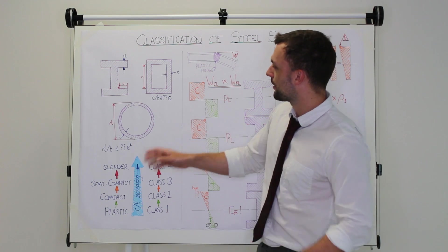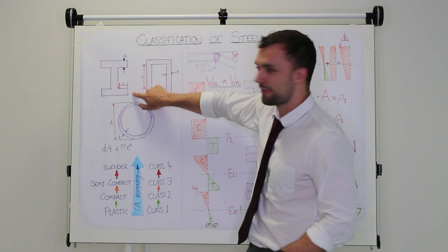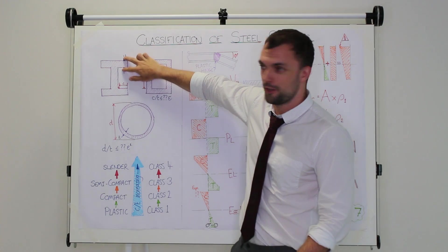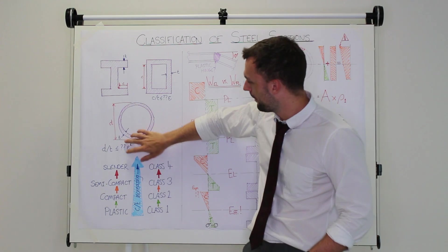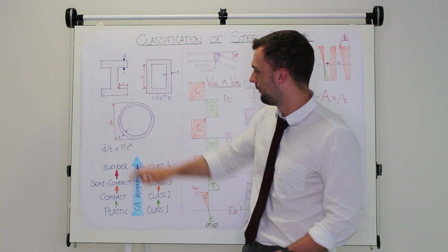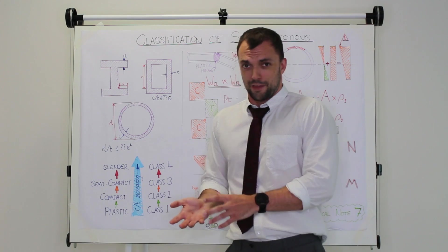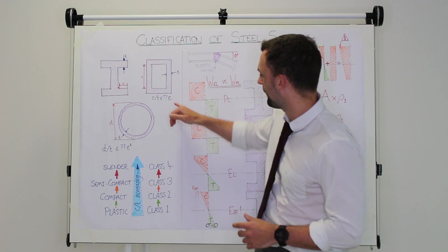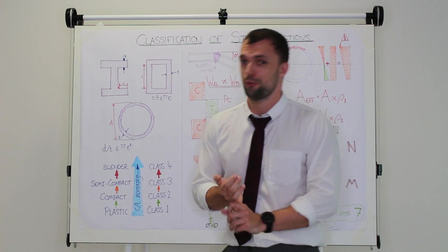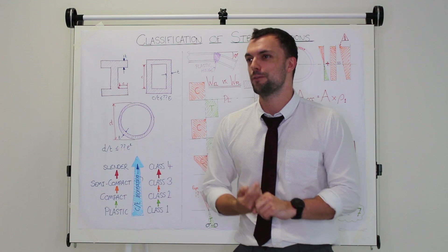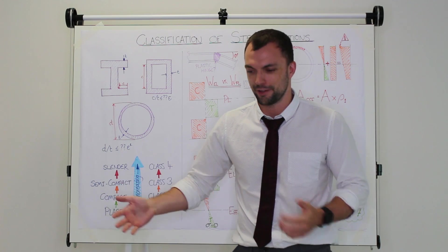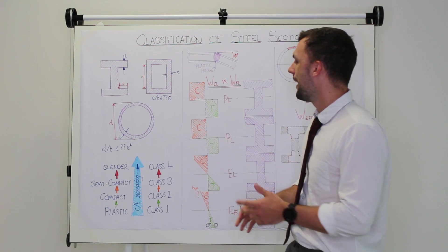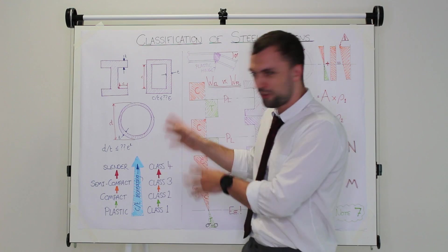First thing we do is we take a comparison of the length of outstands or the depth of internal sections and compare that to its thickness. In the case of the circular hollow section, we're comparing the depth to the thickness of the circle. Once we've got that ratio, we compare it and make sure it's less than a certain number of these epsilons. Now epsilon for S235 is 1, and the value of epsilon reduces the higher the yield strength of the material is. The reason for that becomes clear when you start talking about plastic hinges forming.